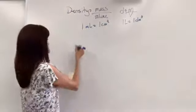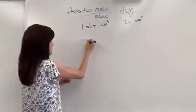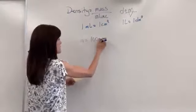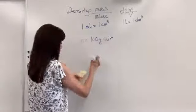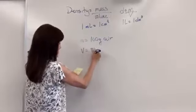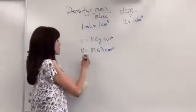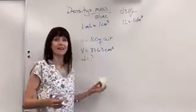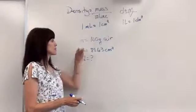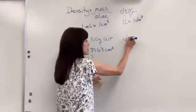Let's say that we are given a mass of 100 grams of air and the volume of this air is 81.63 centimeters cubed. We want to know density. That's the question mark. So once I have it written down I identify my formula.